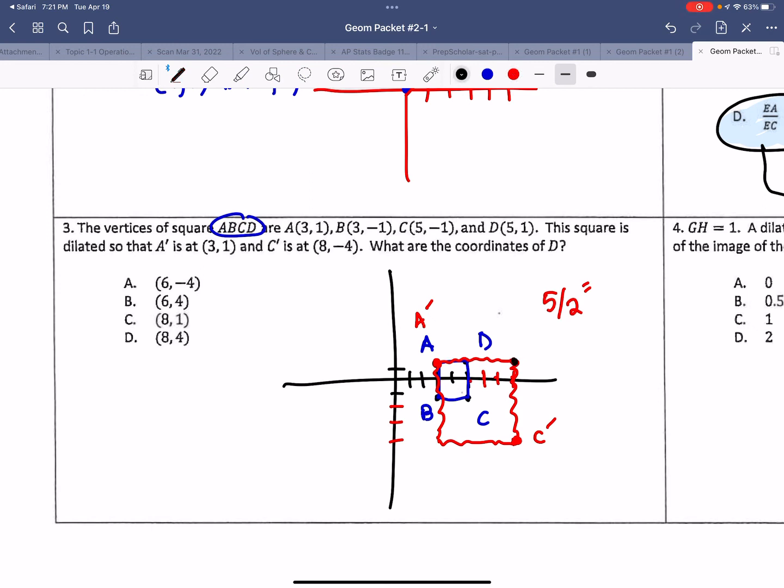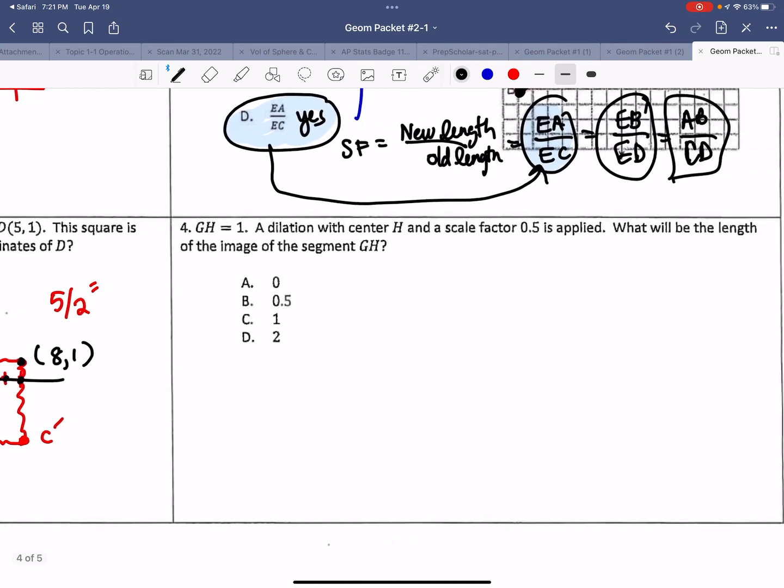It looks like I went over 3, 4, 5, 6, 7, 8, up 1. So over 8, up 1. Is that one of my choices? Yes, it is. Okay. Nice work. Last question.